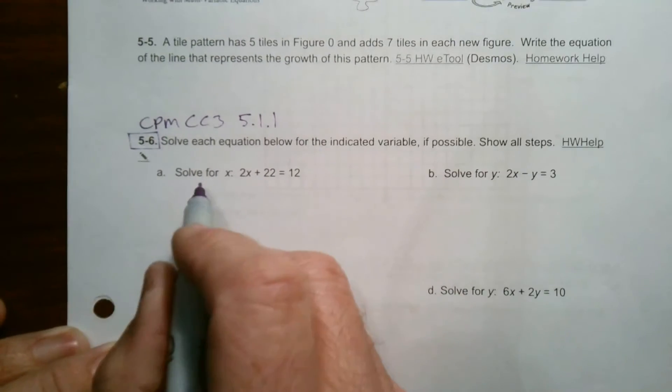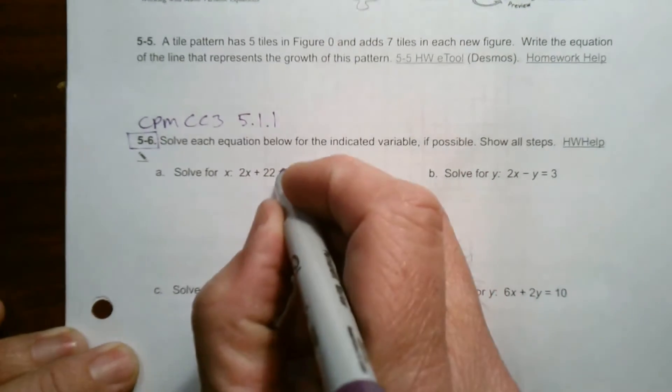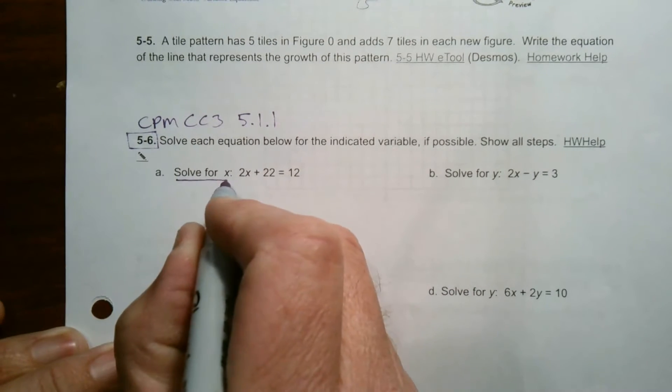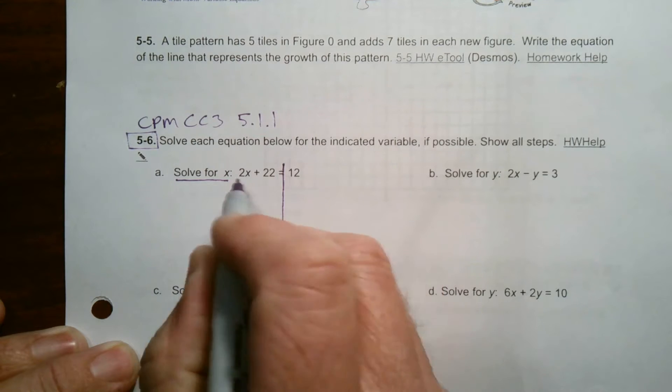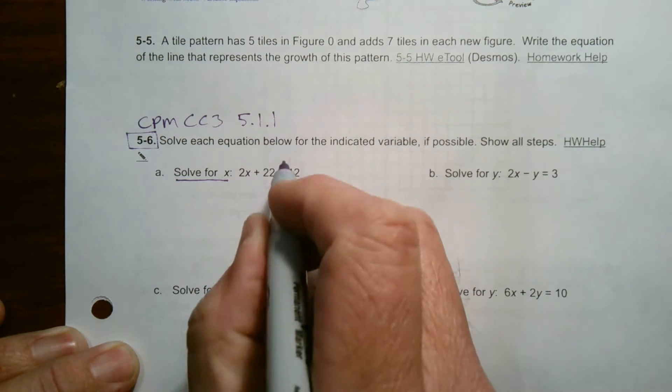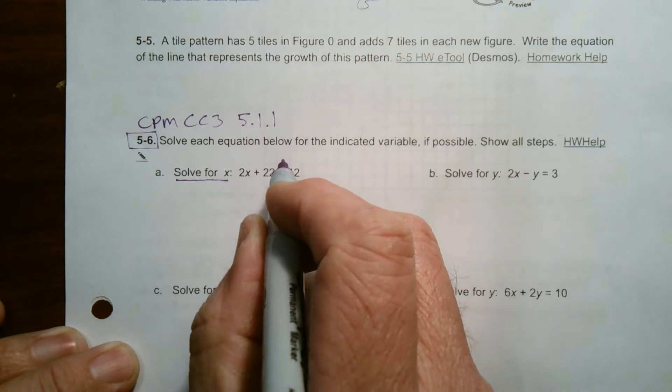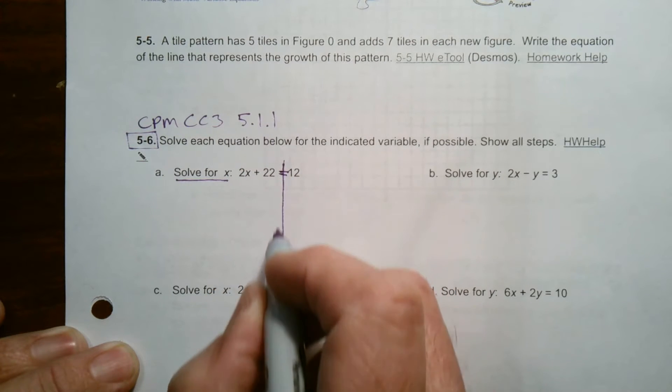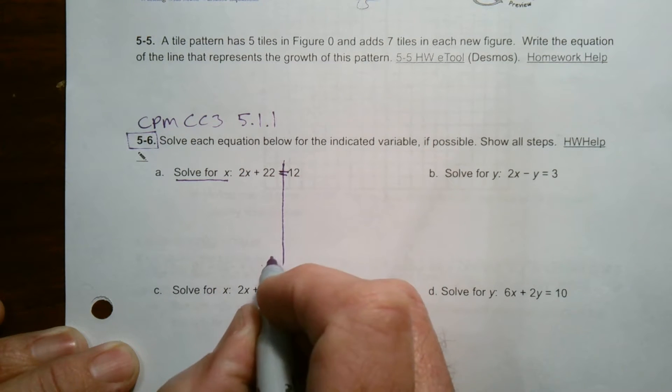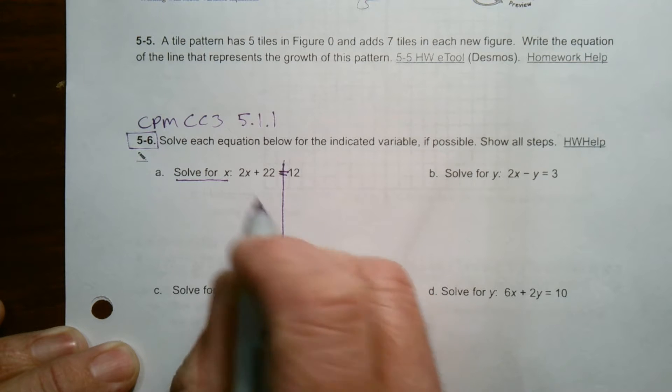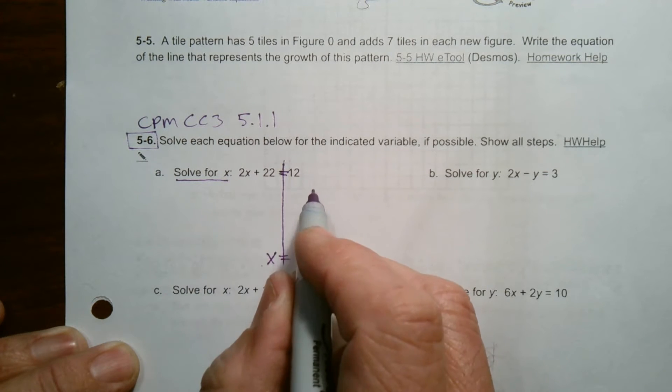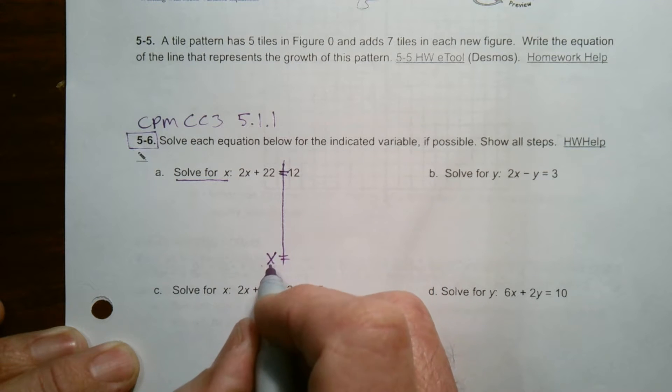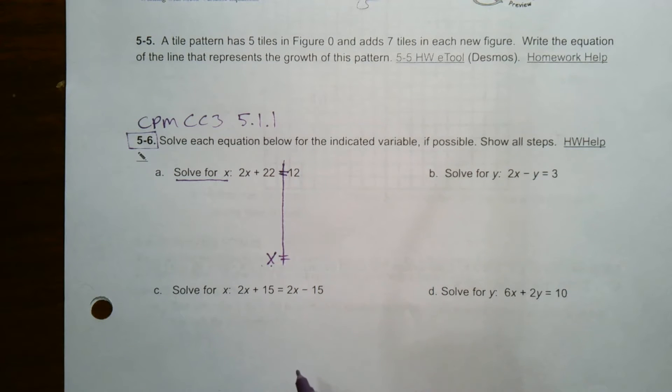So for A, it wants us to solve for x. Anytime you're told to solve for whatever variable, the whole goal is to take this equation and bring down my equation divider here. Wherever the equal sign is, we know we have two sides of the equation. The whole goal is to figure out what that variable is. Get everything on one side of the equal sign and just the single variable on the other. That's the process.